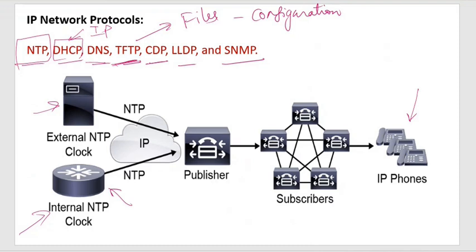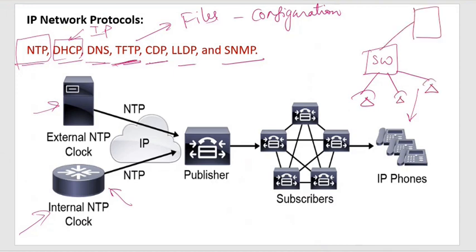Then CDP — Cisco Discovery Protocol. This is used for neighbor discovery, but it also performs some other functions. For example, within a network when you have a switch connecting multiple IP phones connected to a CUCM — these devices first need time synchronization, so you need an NTP server within your network, which can be configured on the CUCM or a router. They also need DHCP — you can have a separate DHCP server, configure it on the CUCM itself, or configure it on a router.